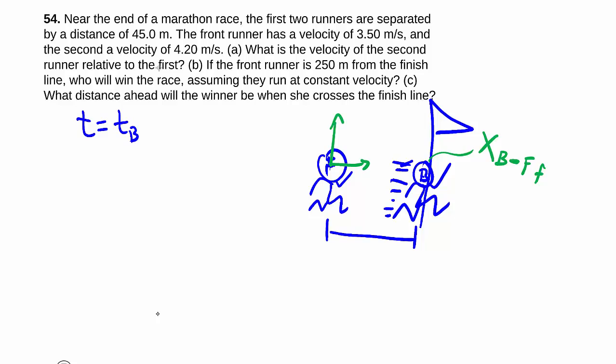So we actually have all those information. We know that this is what we want. We know the original position of the back runner relative to the front runner, which is minus 45 meters, minus being on the other side of the finish line. And we also worked out from part A the back runner's speed relative to the front runner, and that was 0.7 meters per second.